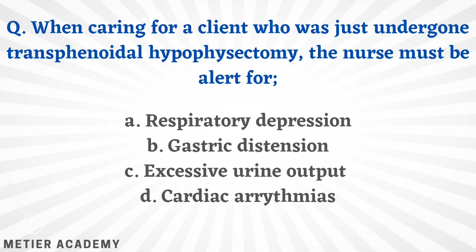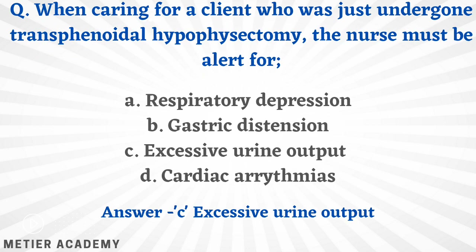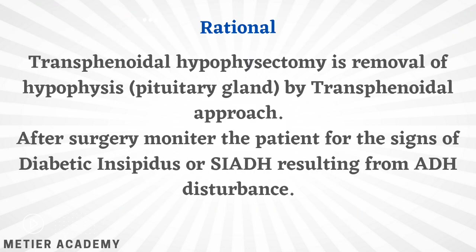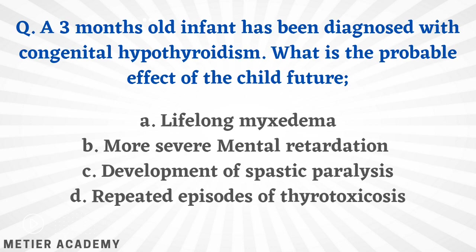Next: when caring for a client who has just undergone transsphenoidal hypophysectomy, the nurse must be alert for — respiratory depression, gastric distension, excessive urine output, or cardiac arrhythmias? The correct answer is option C, excessive urine output. Transsphenoidal hypophysectomy is removal of the pituitary gland via the transsphenoidal approach. After surgery, the patient must be monitored for signs of DI (diabetes insipidus) or SIADH, which result from ADH disturbance.